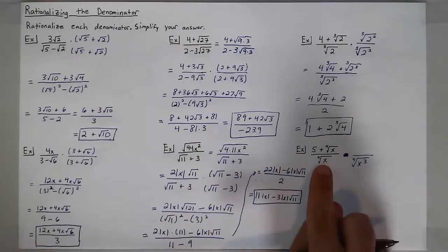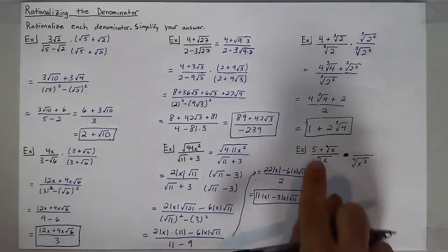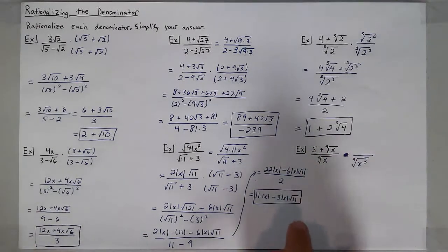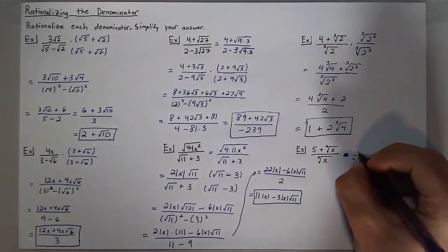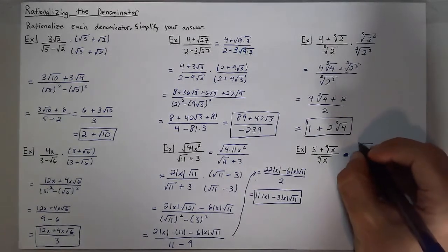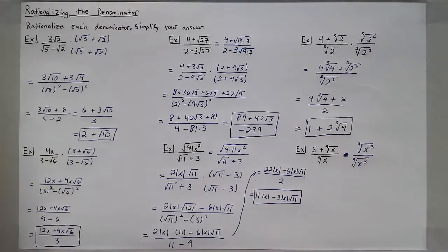So I get x to the first times x to the third, which is x to the fourth, which helps me get rid of that fourth root in my denominator. Whatever I do to the denominator, I must also do to the numerator.